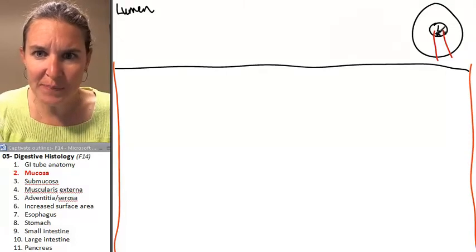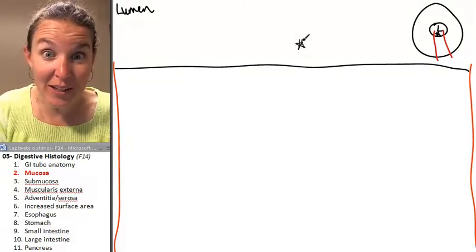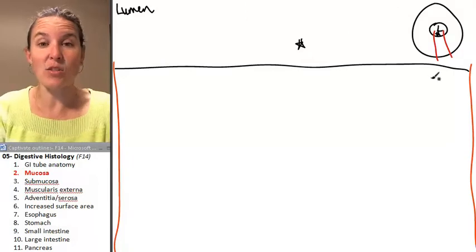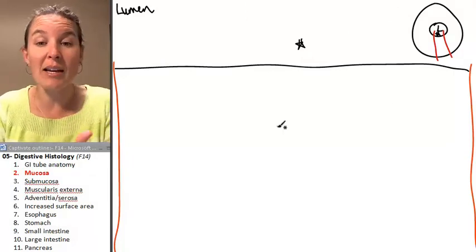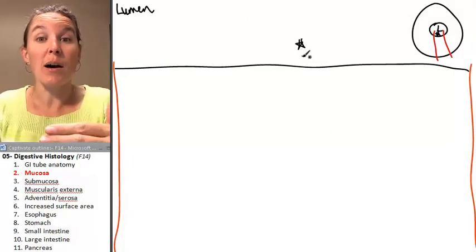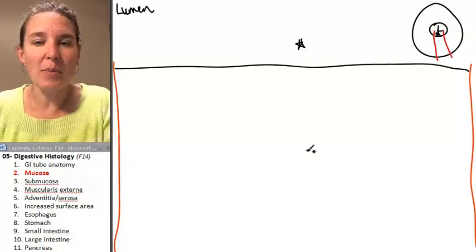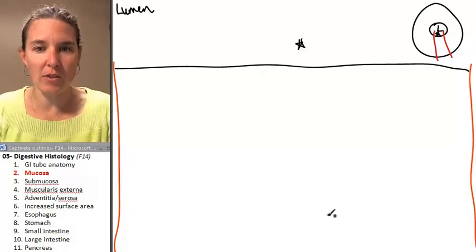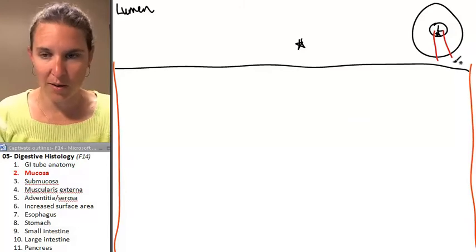Here's the lumen and here's the lumen - it's the same thing. Now I'm going to look at my layers from luminal to basolateral in this direction. You got where I was going with all that.